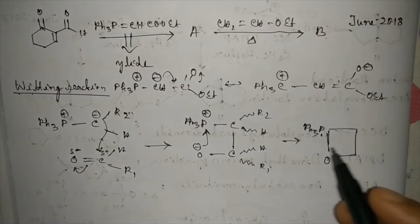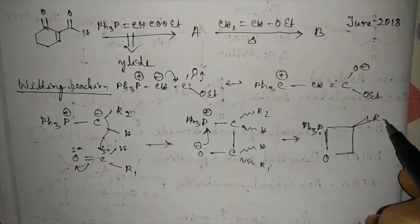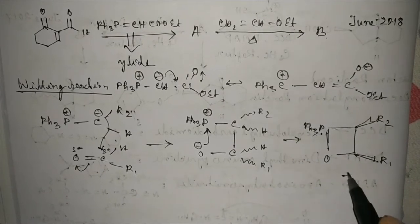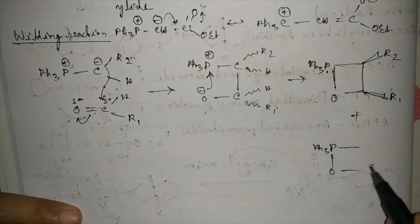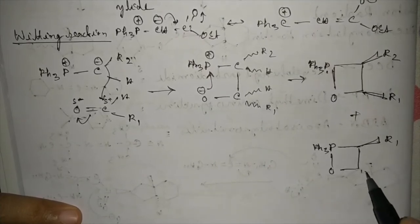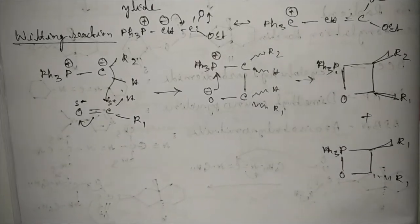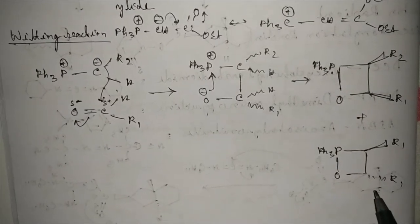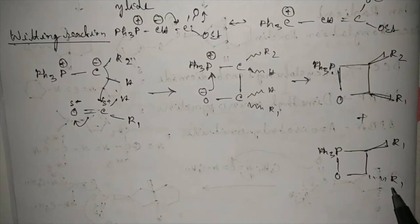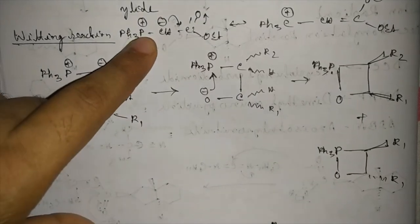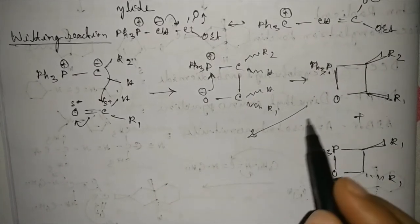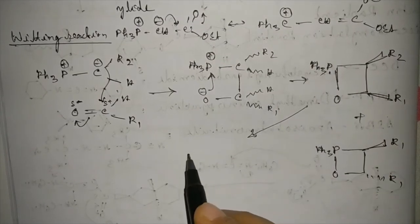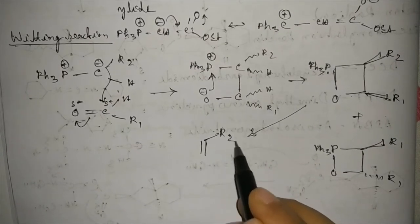From the oxaphosphetane intermediate, two types of product may form. R₂ and R₁ may be in cis position, or in another oxaphosphetane intermediate they may be in trans position on this four-membered ring. The more stable product is the one where R₁ and R₂ are in trans position, because steric strain is less. Where both groups are cis, steric strain is higher. From the cis oxaphosphetane intermediate, a cis-alkene is formed; from the trans oxaphosphetane intermediate, a trans-alkene is formed.